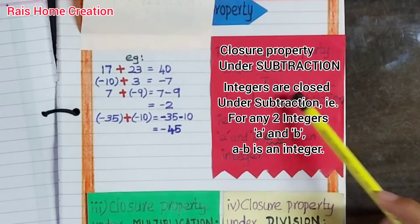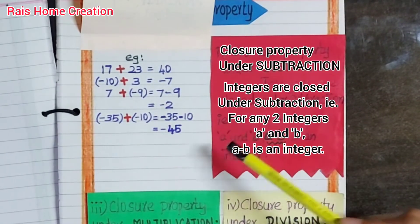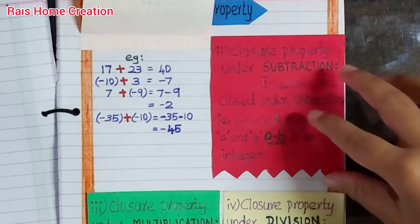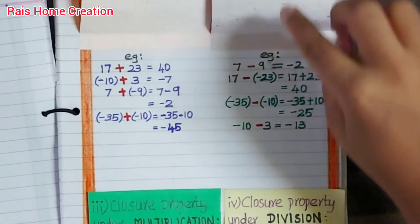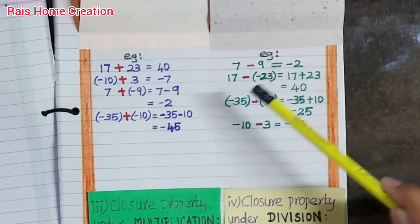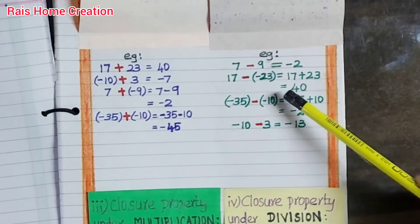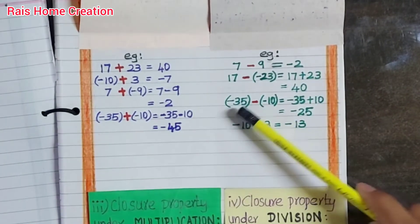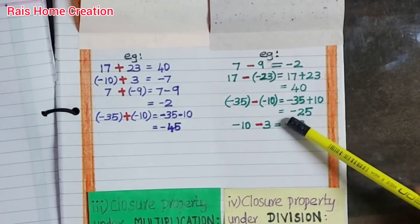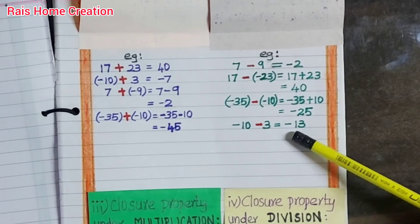Integers are closed under subtraction — that is, for any two integers A and B, A minus B is an integer. For example: 7 minus 9 equals minus 2; 17 minus minus 23 equals 17 plus 23 equals 40; minus 35 minus of minus 10 equals minus 35 plus 10 equals minus 25; minus 10 minus 3 equals minus 30.